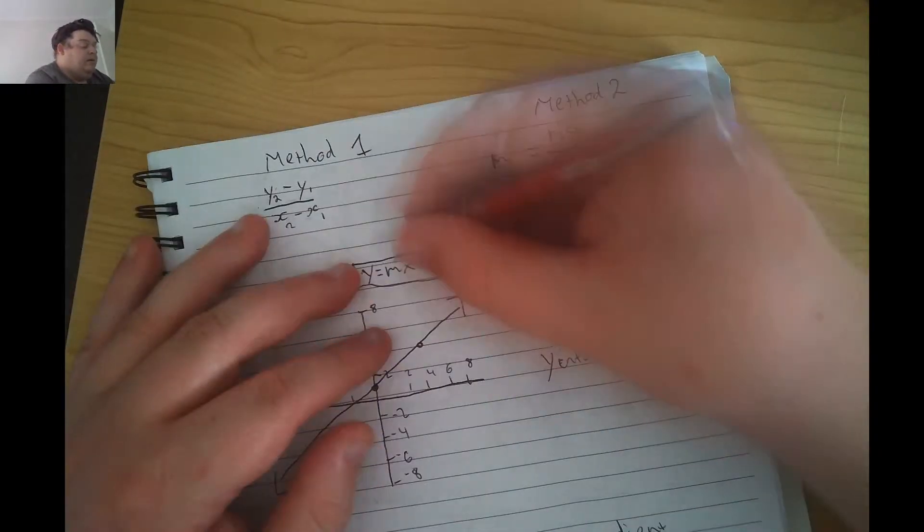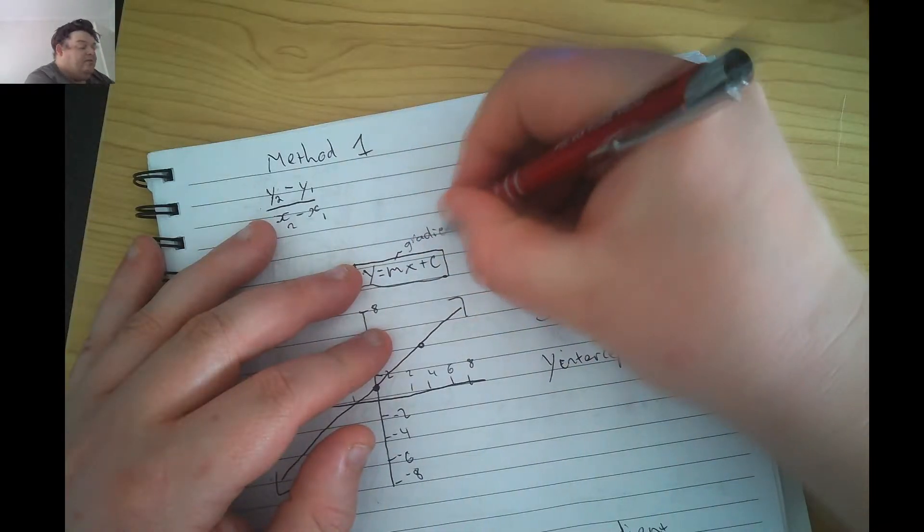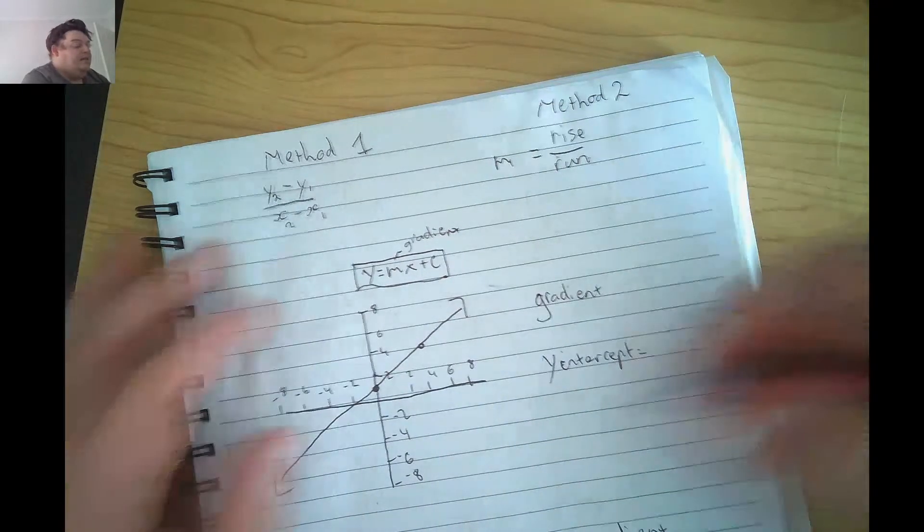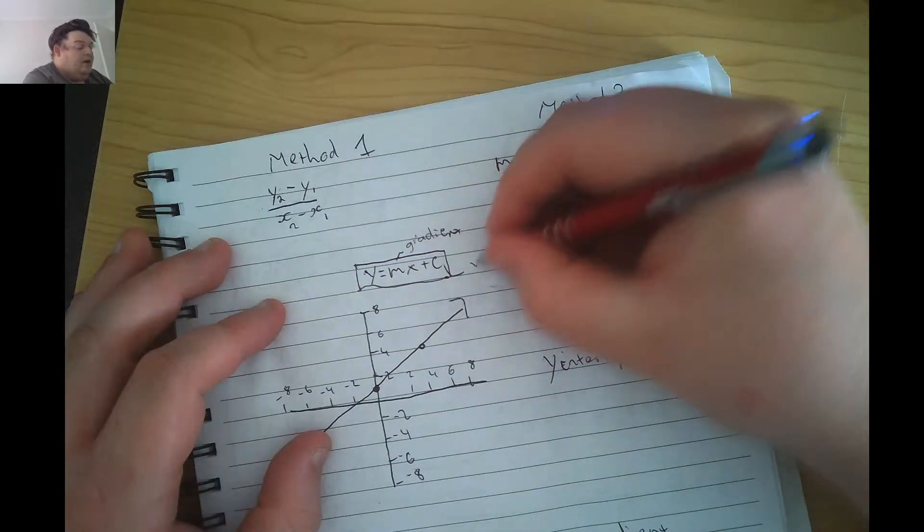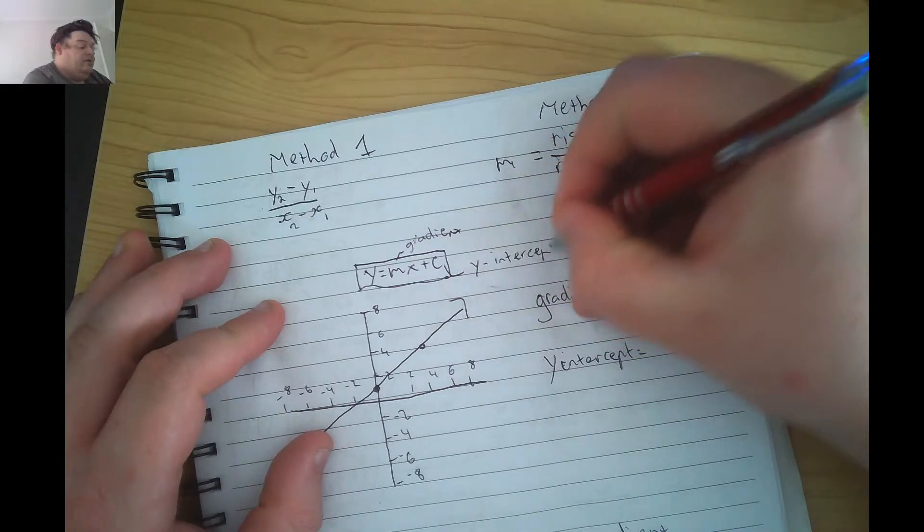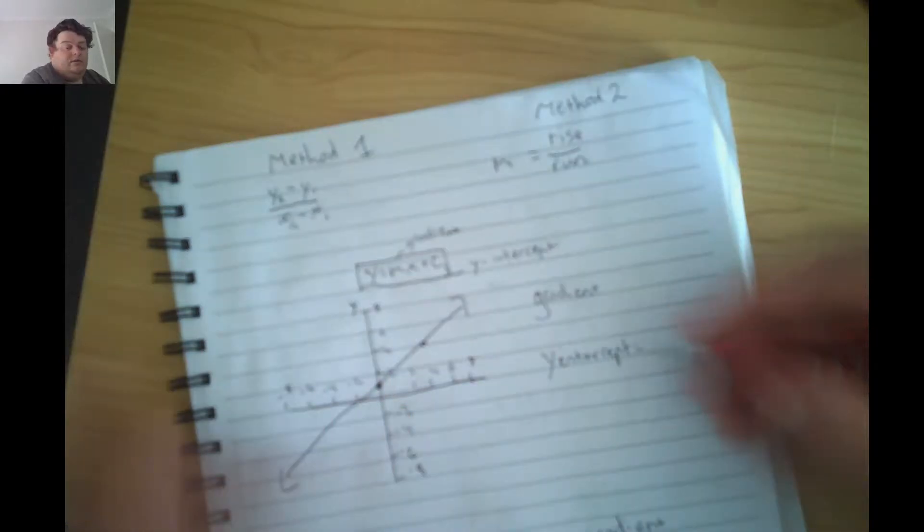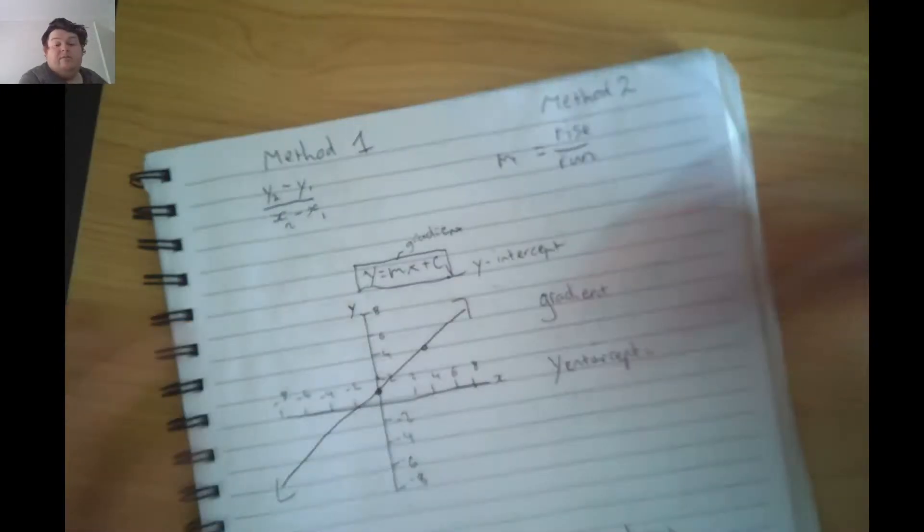Now the m means gradient, which means how steep is the line, and c is what we call the y-intercept, which is where the line crosses the y-axis, which is this vertical one here. That's what we're looking at today.